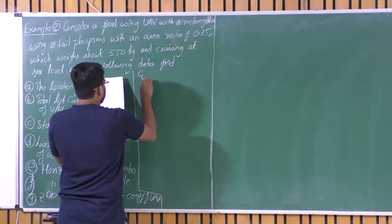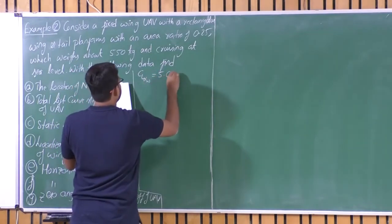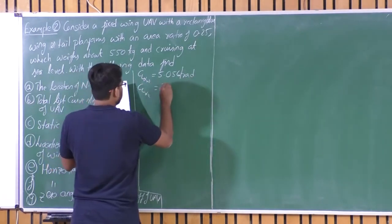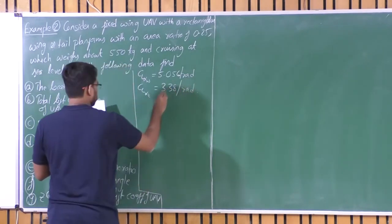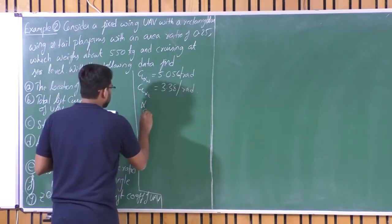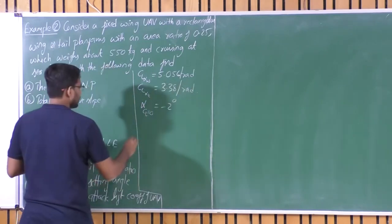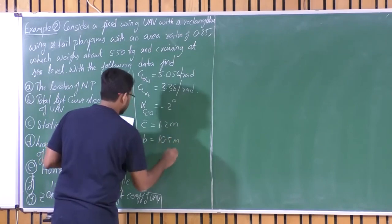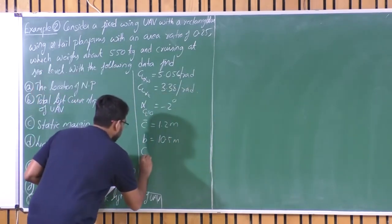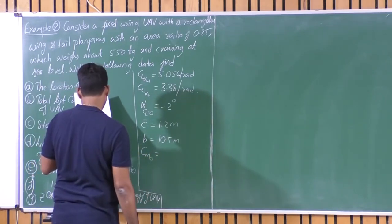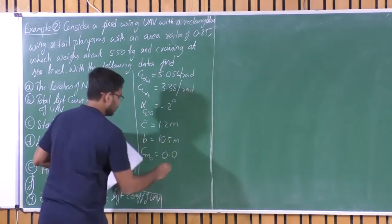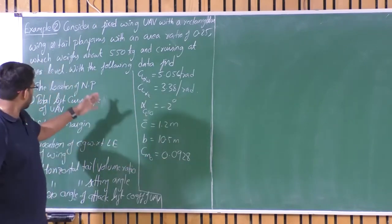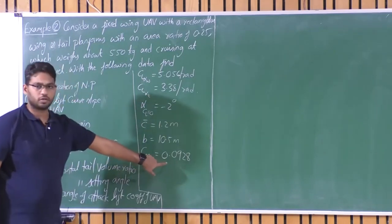CL_alpha of wing is given as 5.056 per radian. CL_alpha of tail is given as 3.38 per radian. Alpha at which CL is 0 is minus 2 degrees. C_bar is 1.2 meters and the span is 10.5 meters. CM_naught of the UAV is 0.0928. In our previous example we found CM_naught, but right now we are given this CM_naught and finding all other parameters.